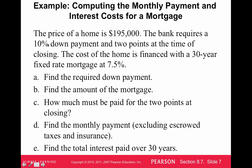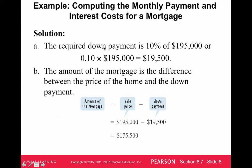The down payment is 10% of $195,000, which equals $19,500. The mortgage amount — the loan amount — is $195,000 minus $19,500. So to buy this home, you pay $19,500 upfront to the seller, and then borrow $175,500 from the bank.